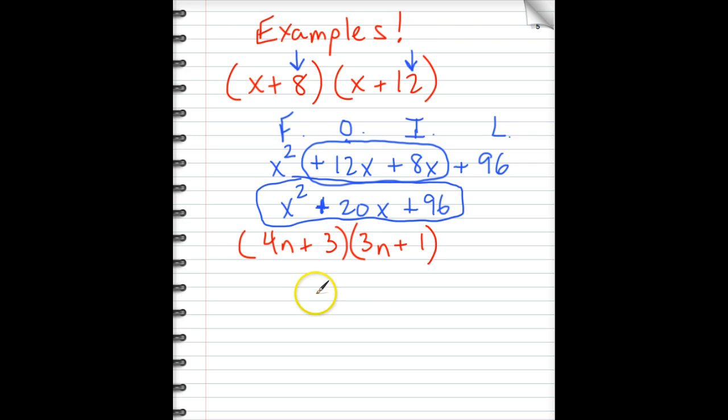Okay, we'll try it again for this binomial times binomial. FOIL: first, outside, inside, last. First, 4n times 3n is 12n². Outside, 4n times 1 is positive 4n. Inside, 3 times 3n is 9n. And last, 3 times 1 is 3. Again, you have like terms here in the middle. So we have 12n², 4n plus 9n is 13n, and recopy the plus 3.